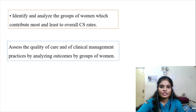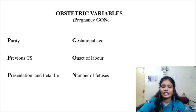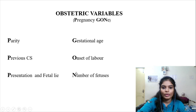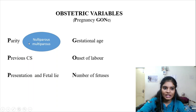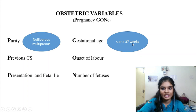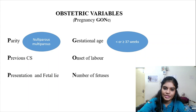The Robson classification is based on six obstetric variables. Remember them as three Ps and GON: P for parity (nulliparous or multiparous), P for previous caesarean section (yes or no), P for fetal presentation (transverse, cephalic, or oblique), G for gestational age (less than 37 weeks or ≥37 weeks), O for onset of labour (spontaneous or induced), and N for number of fetuses (single or multiple).